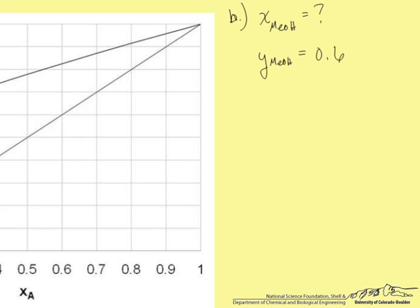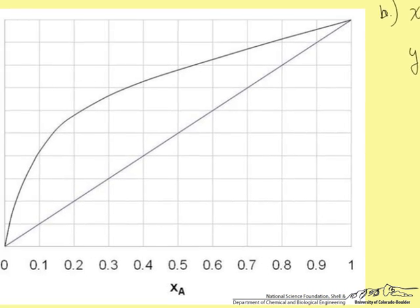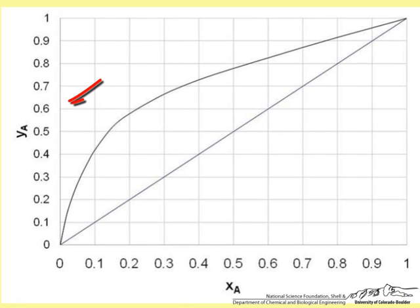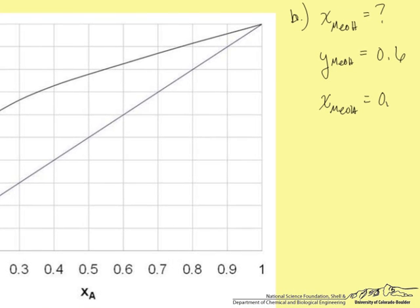So we can use our equilibrium data line to find X MeOH. From our plot, 0.6 is right here for YA composition. Going across, we hit the equilibrium data line here. That means that our X value for methanol in the liquid stream is about 0.23. So X of methanol in the liquid stream is 0.23.